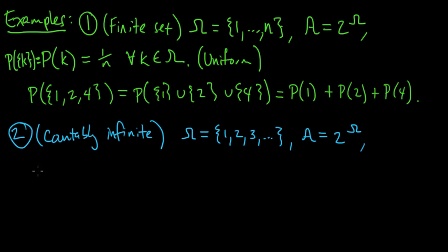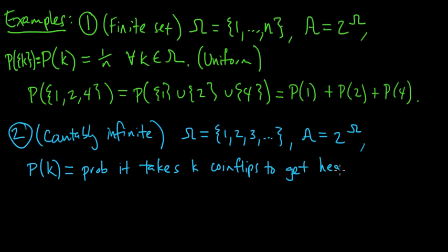And now we will define, in the same way, we'll define it on the one element sets. P of K is going to be the probability that it takes K coin flips to get heads. So suppose we're flipping a coin.